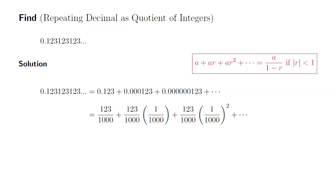All right, since this is a geometric series and our R value is 1 over 1000, which is less than 1, we can apply the formula. A is 123 over 1000, 1 minus R is 1 minus 1 over 1000. So all we have to do is simplify this.